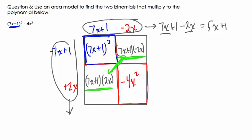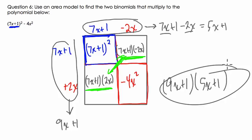And over here, 7x plus 1 plus 2x is 9x plus 1. So those are our two binomials, and our final answer is 9x plus 1 times 5x plus 1. And that's it. All right, thanks.